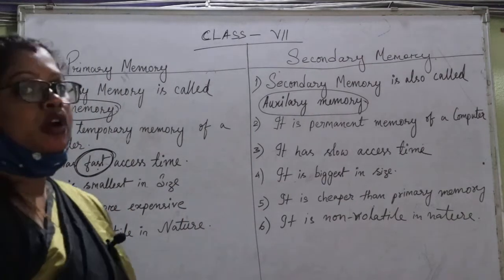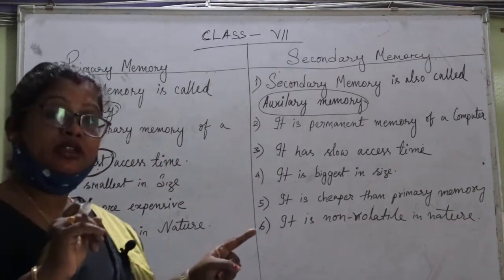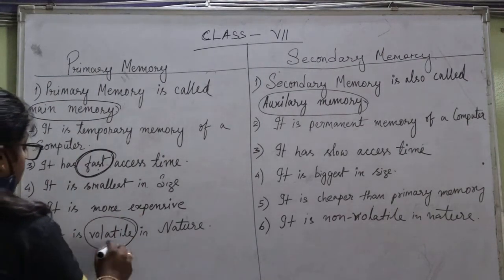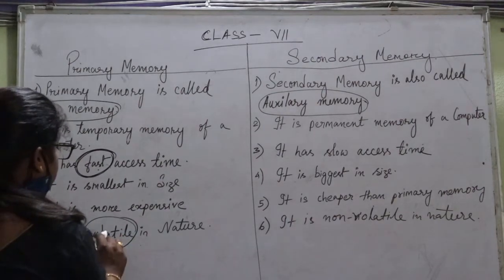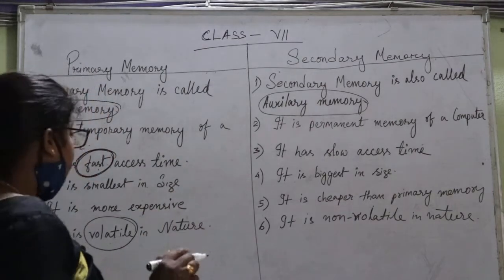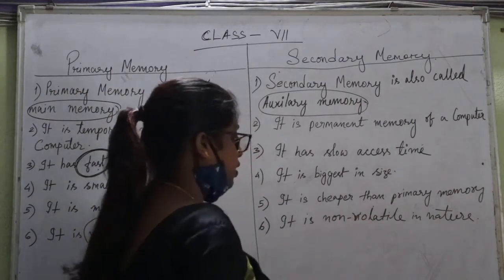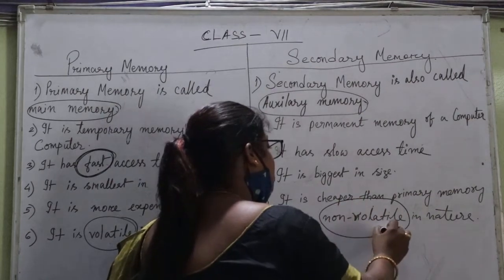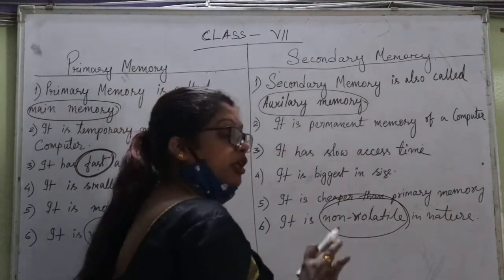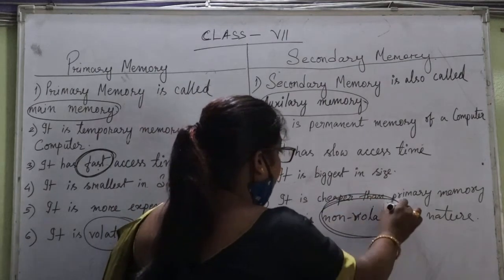Number six point: primary memory is volatile in nature. Volatile means we cannot store the information if the computer is switched off — that is why it is known as volatile in nature. But secondary memory is non-volatile in nature, because we can store information and programs even if the computer is on or off — it does not matter. That is why secondary memory is called non-volatile in nature.